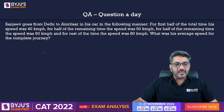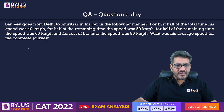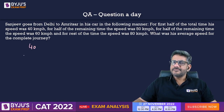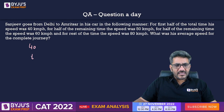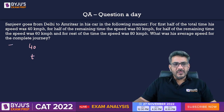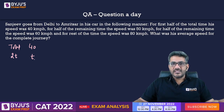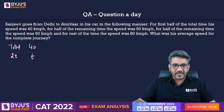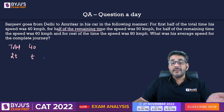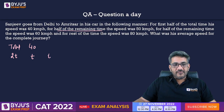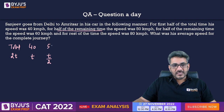What was his average speed for the complete journey? I am assuming the total time to be 2t. So for first half of 2t, that is for t time, the speed was 40. Then for half of the remaining time — the remaining time is t — and half of that remaining time is t/2, so for t/2 time the speed was 50 km/h.